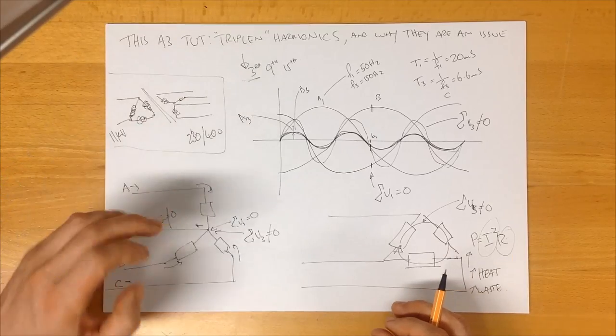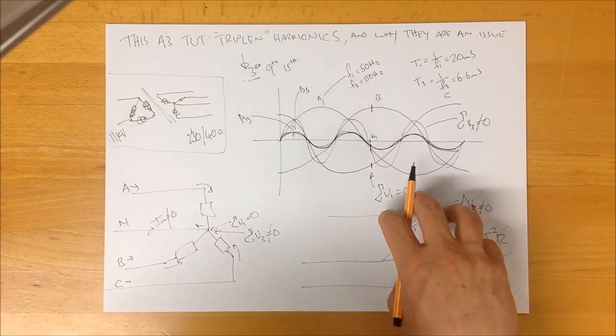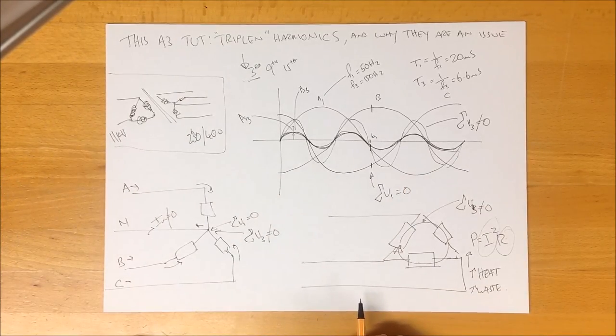But they cancel these triplens because triplens are a problem in star systems, and they're a problem in delta systems. Thanks for watching.